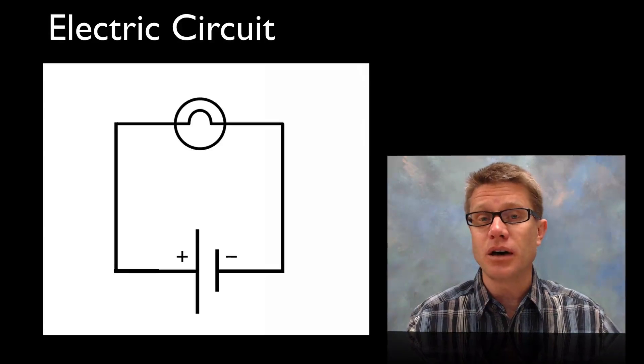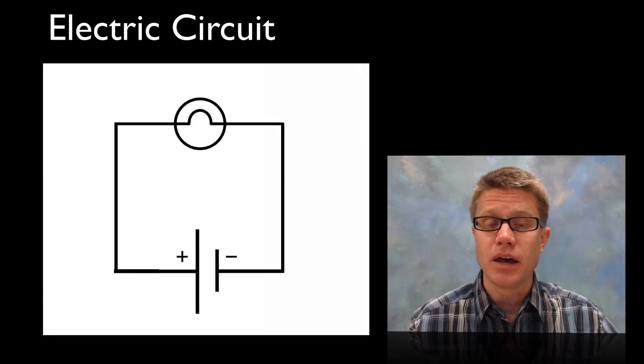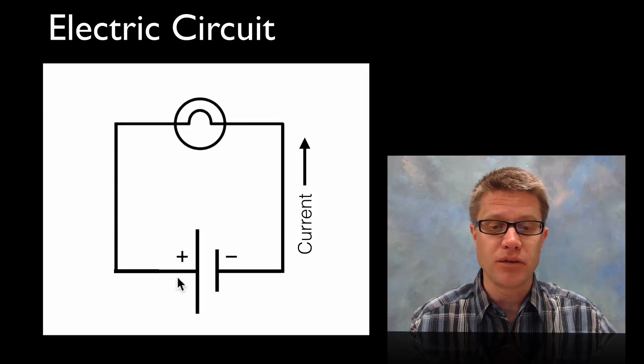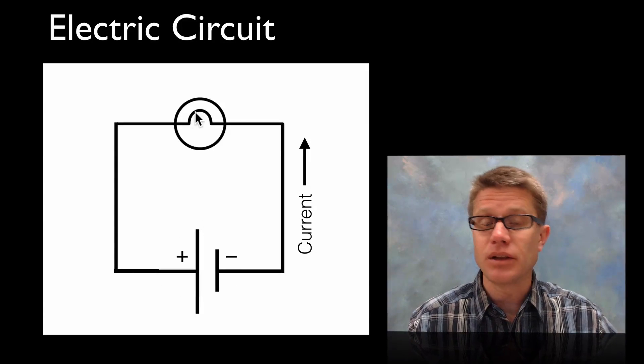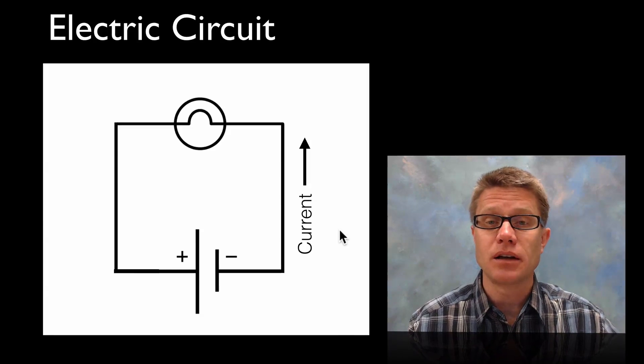And so that movement of charge is current. And if we can get that current moving in a loop then we can do something with it. And so in this simple circuit diagram we have a battery right here. And then we have a lamp. And so if we can move that current in one direction we can make that light glow.